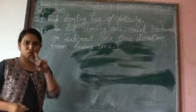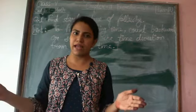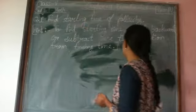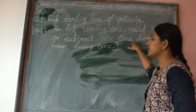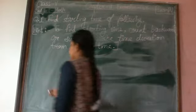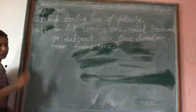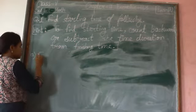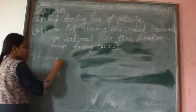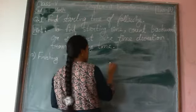To find starting time, we have 2 methods. One is: we can draw a timeline and then count backward. The other is: subtract the time duration from finishing time. Basically, to find a starting time we subtract. Two things are given — finishing time is given and time duration is given.